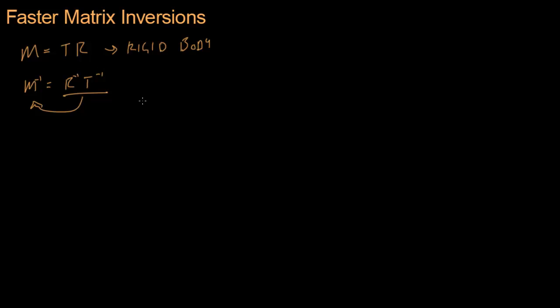So let's build an M matrix from T and R. If you remember, T looked like this: 1, 0, X, 0, 1, Y, 0, 0, 1, Z, 0, 0, 0, 1. Where these guys right here, I'm going to call them T, this was your translation.